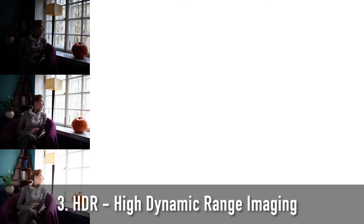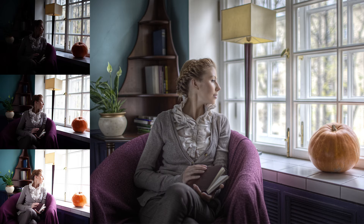Third example: HDR technique. This involves taking multiple shots with different exposures, changing only the shutter speed, to later merge them into one image containing information from both dark and bright areas. This results in a photo without shadow falloff or overexposure. Achieving this in video is more complex, but neural networks help animate it into a video.